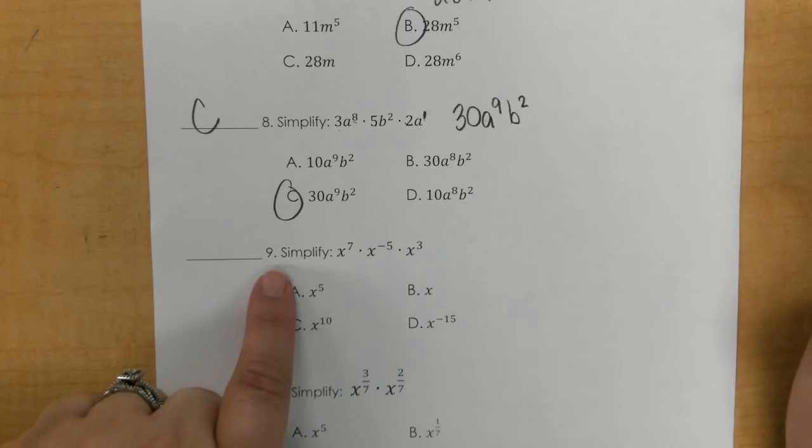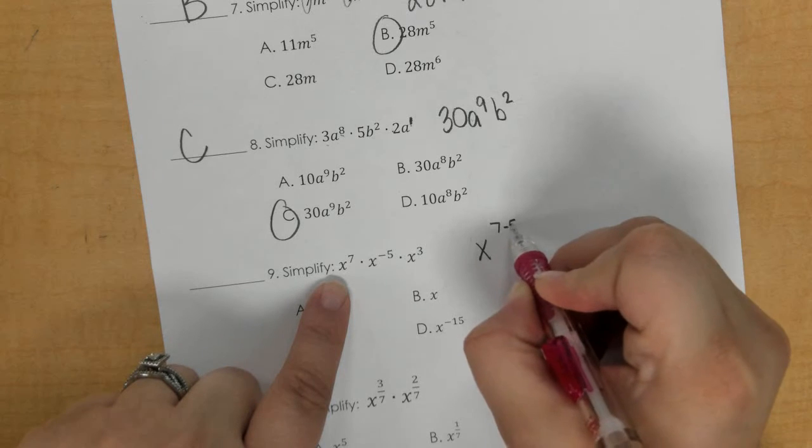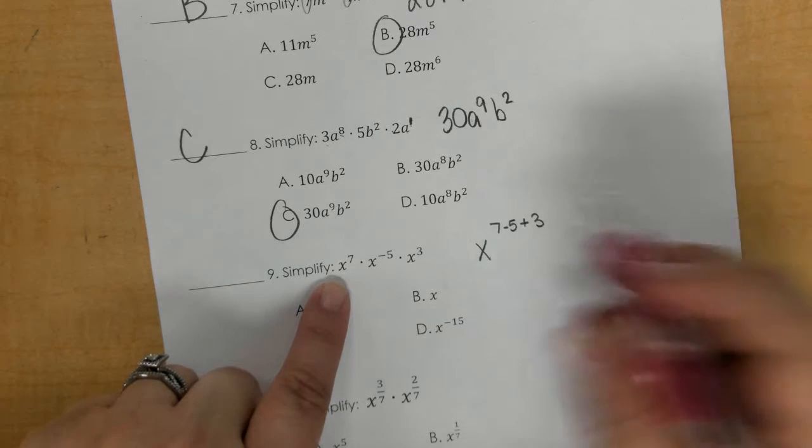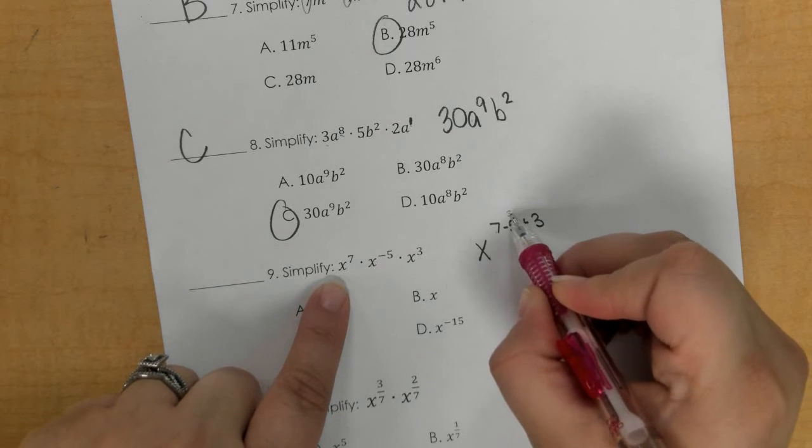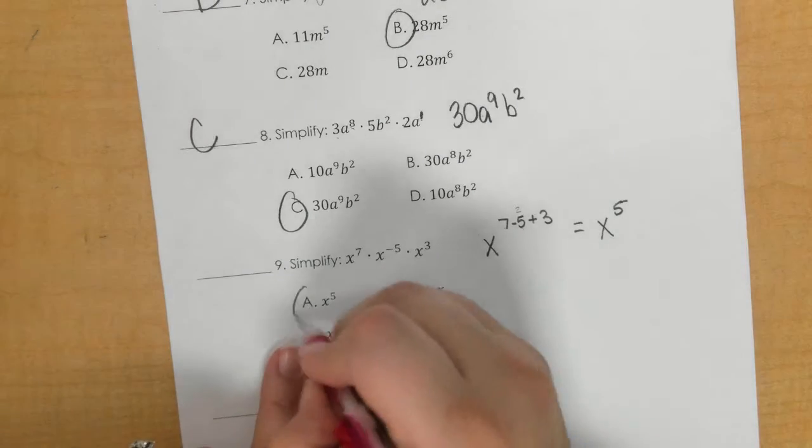In number 9, we are adding or combining straight across, so we're really saying 7 minus 5 plus 3. So 7 minus 5 is 2, and 2 plus 3 is 5. So that would be A.